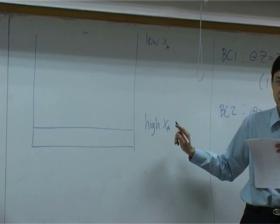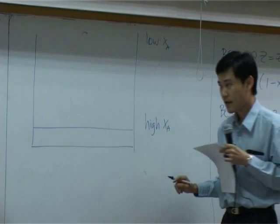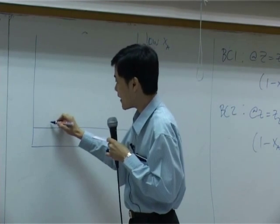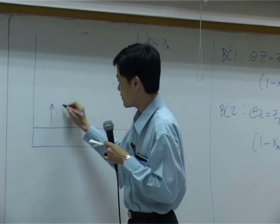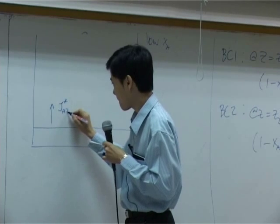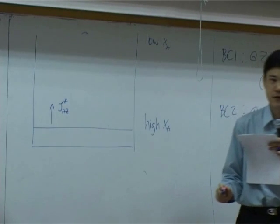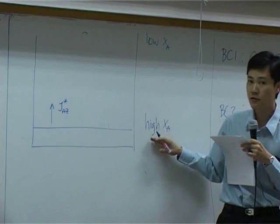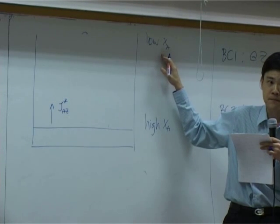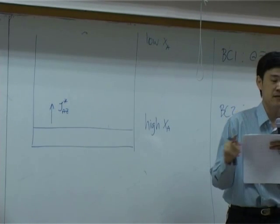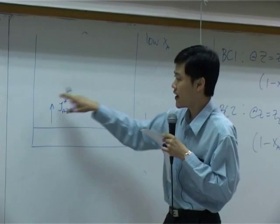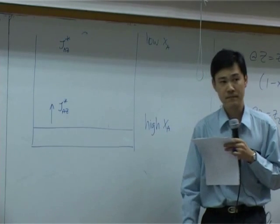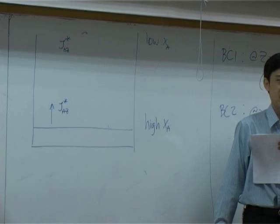Diffusion flux goes from high concentration to low concentration. The diffusion flux is represented by J_A*. We have J_A* which is the diffusion flux of A going from high to low concentration. The question is: do you think J_A* at this position and J_A* at that position should be the same? Are they constant?